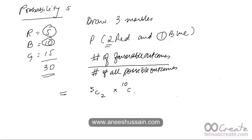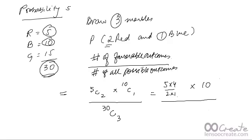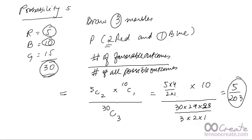5C2 times 10C1 is the number of favorable outcomes. We want nothing from green, so we ignore green. Divide by all possible outcomes: there are 30 total marbles and we are drawing 3, so that's 30C3. Solving: 5C2 is 5 times 4 over 2 times 1, and 10C1 is 10, divided by 30C3 which is 30 times 29 times 28 over 3 times 2 times 1. The answer again is 5 upon 203.